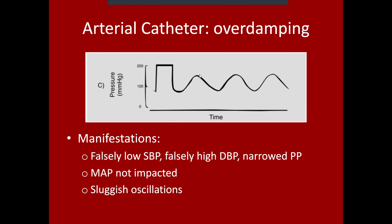The overdamped waveform shows softer, more rounded peaks with slightly lower amplitude, reflecting the lower systolic and higher diastolic blood pressures, and more sluggish oscillations — if there are any oscillations on the downslope at all. This is because the arterial system or surrounding structures are absorbing more arterial pulse energy.